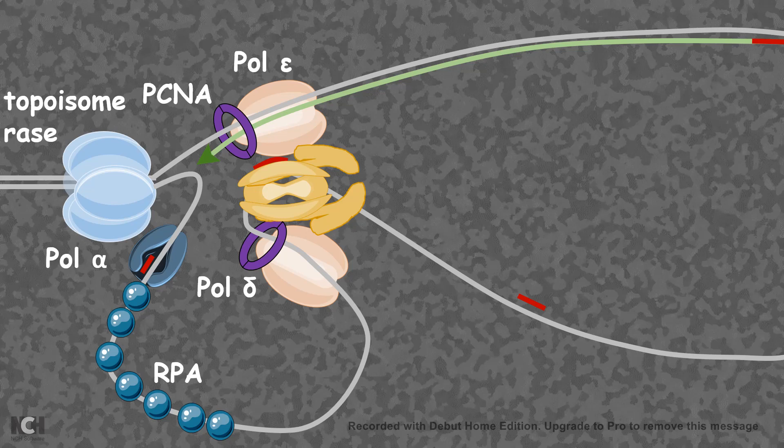In case of eukaryotes, the beta clamp is actually known as PCNA. It's just the same type of machinery, but with a different name. And there is also a lagging strand and leading strand mechanism.